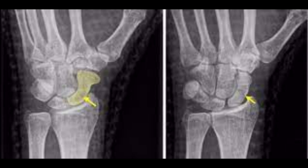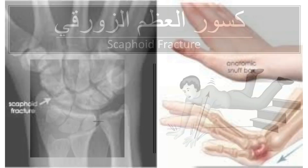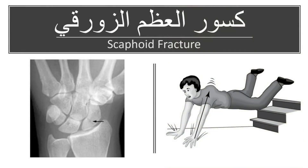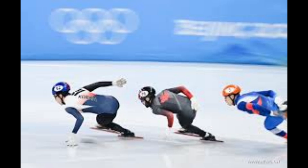How does the fracture occur? A scaphoid fracture usually occurs as a result of falling onto an outstretched hand, such as when trying to stop a fall with the hand. This type of fracture is common in athletes, especially in sports that require a lot of balance such as cycling or skiing. In some cases, the injured person may not feel severe pain immediately, which leads to delayed diagnosis and treatment.